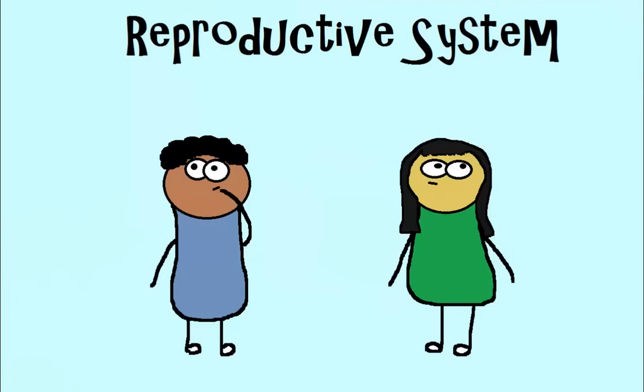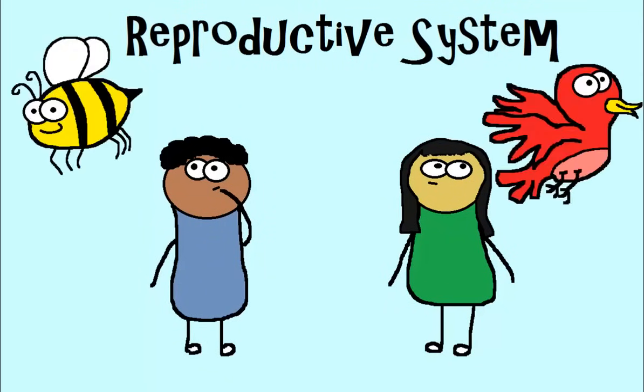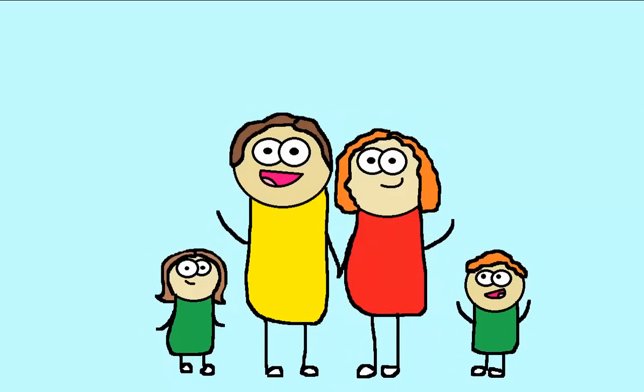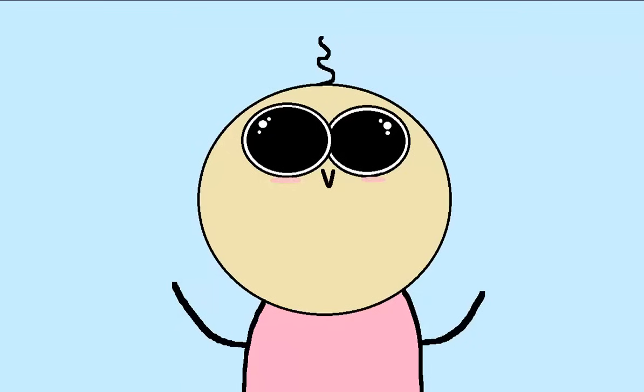Number nine, reproductive system. Like it sounds, this system includes reproductive organs. And the major function here is that it allows for animals to reproduce. So think babies.